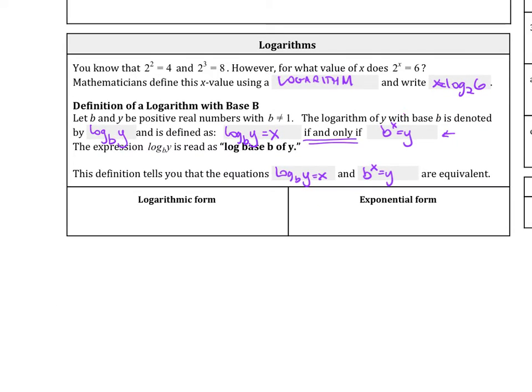So first, we need to have it clear what the logarithm form is. Log logarithm form has a log in it. Log base b of y equals x. And that's how you read it. Now you say that. And then exponential form is b to the x equals y. I want you to notice where the x is.